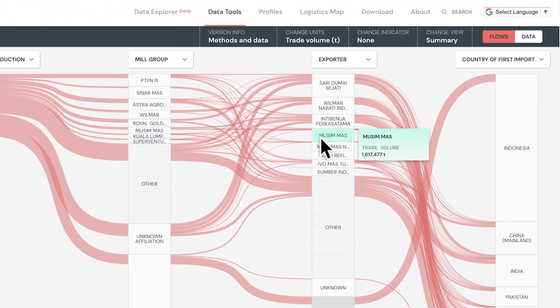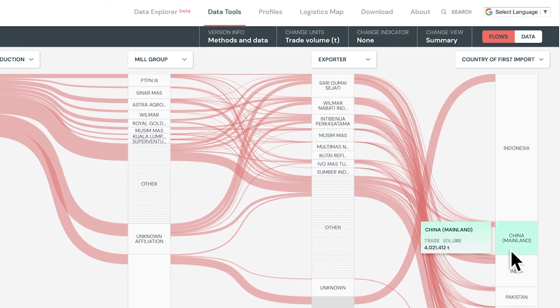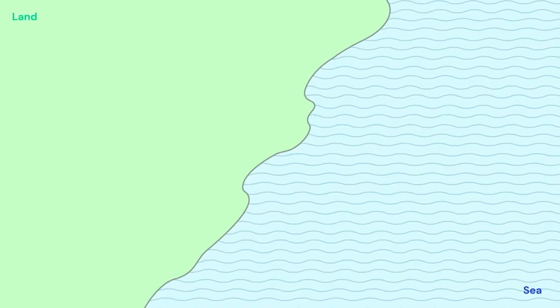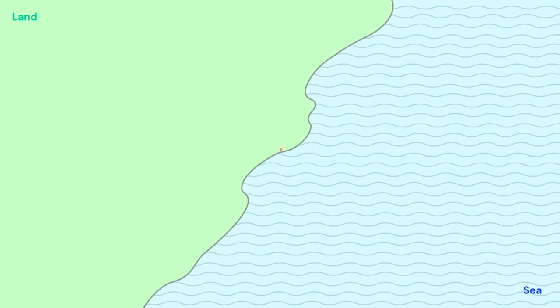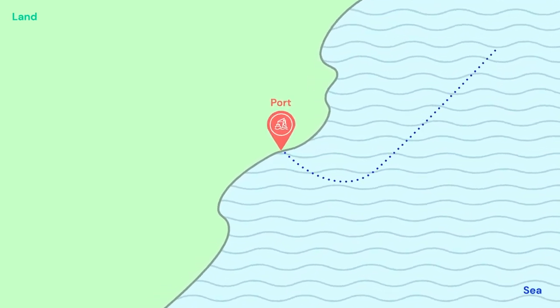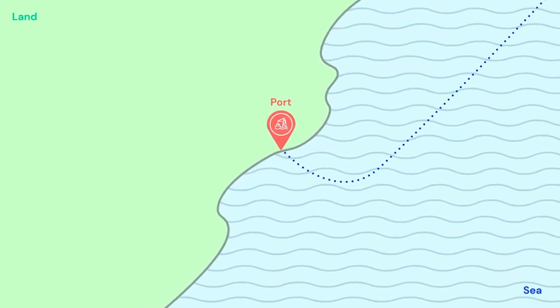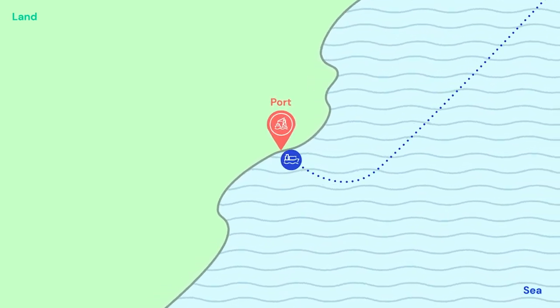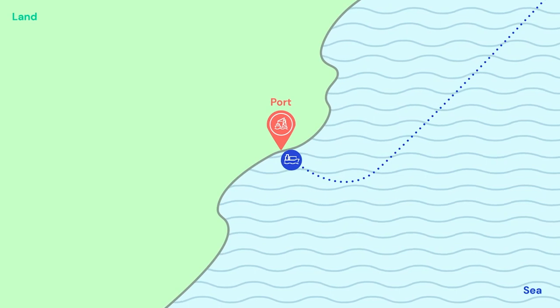In some cases, Trace also shows how much goes to the domestic market. We do this by connecting different datasets. The exact data sources and methods vary by country and commodity, but there is a broad common approach to them all.